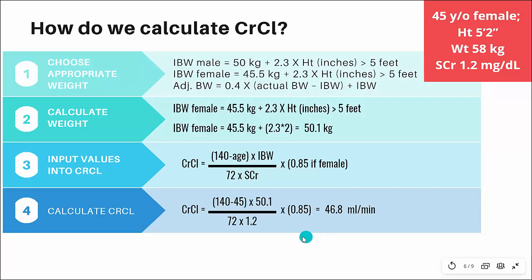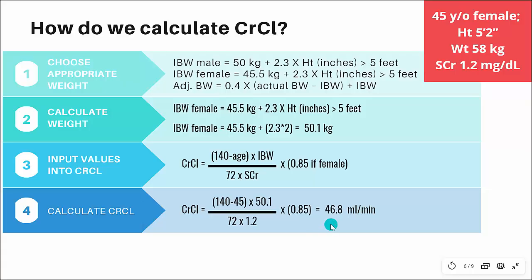Here I've inputted the values. You can see I've entered 45 for age and 50.1 kilograms as the ideal body weight from the previous step. I've also inputted the serum creatinine of 1.2 from the patient's labs. Since this patient is female, I've left in the 0.85 multiplier. Once you calculate it, the creatinine clearance is 46.8.